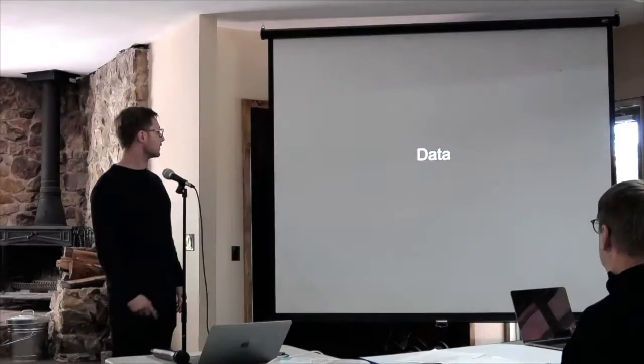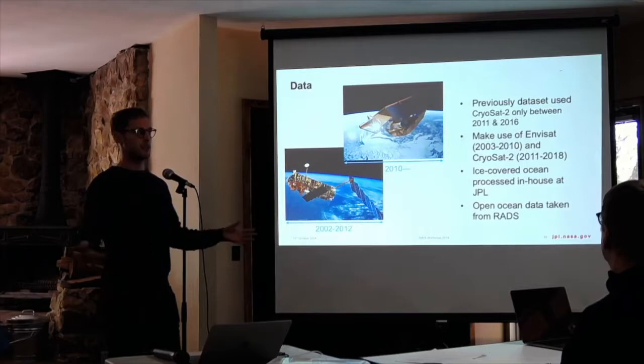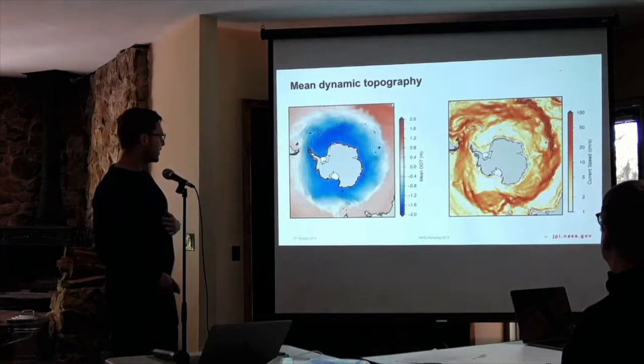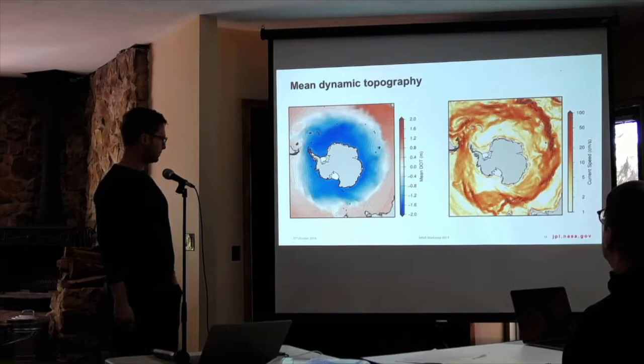We use data from two satellites. The first is Envisat, launched in the early 2000s, and we stitched that together with CryoSat-2. We processed the ice-covered part in-house and stitched it together with a standard altimetry product from the ocean. This is the mean dynamic ocean topography in the Southern Ocean and current speed on the right. You can see we're resolving the ACC and also the slope current, nicely resolved around most of the shelf.